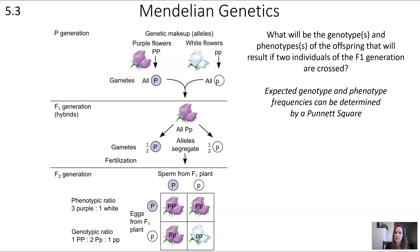Expected genotype and phenotype frequencies can be determined using a Punnett square. You put the possible alleles from parent one on the top and the potential gametes from parent two on the left side, then figure out each combination. Because both F1 parents produce either big P or little p gametes, the three possible genotypes are PP, Pp, and pp in a 1:2:1 ratio. The phenotypic ratio is three purple to one white, because in simple dominance the heterozygote and homozygous dominant have the same phenotype.